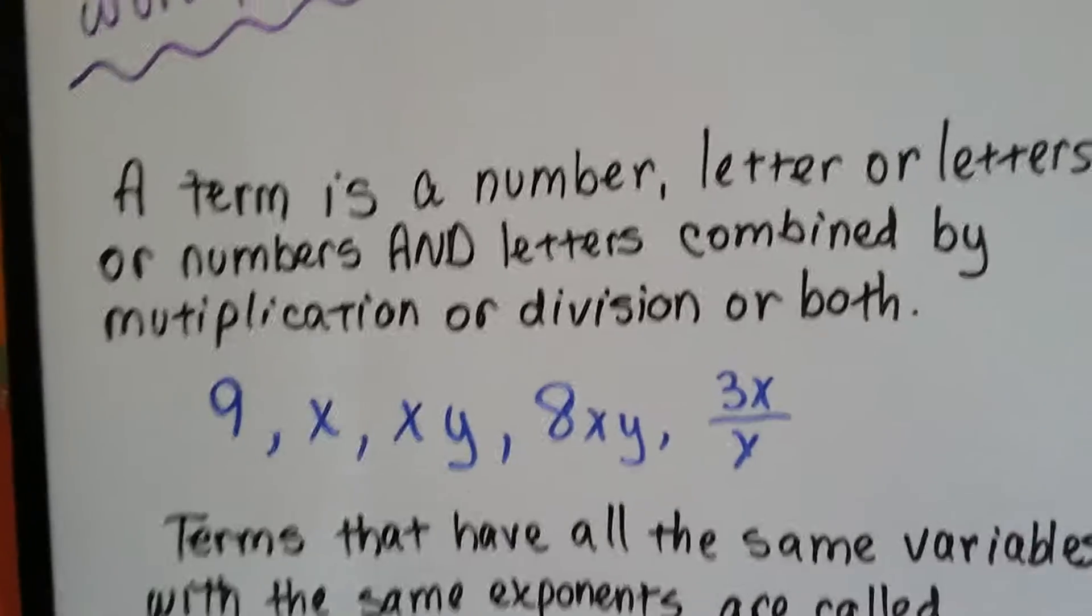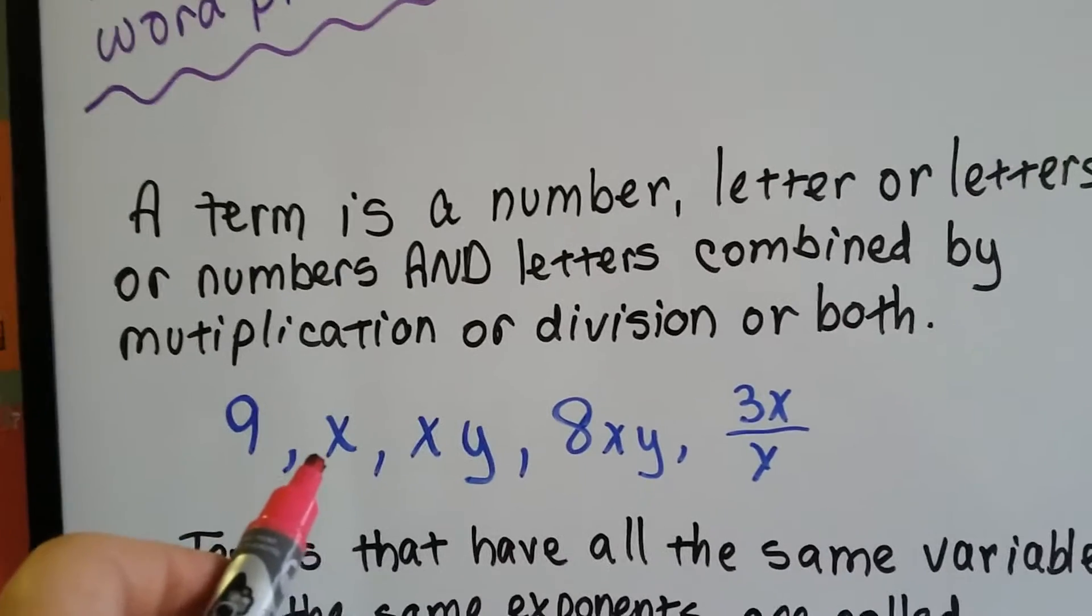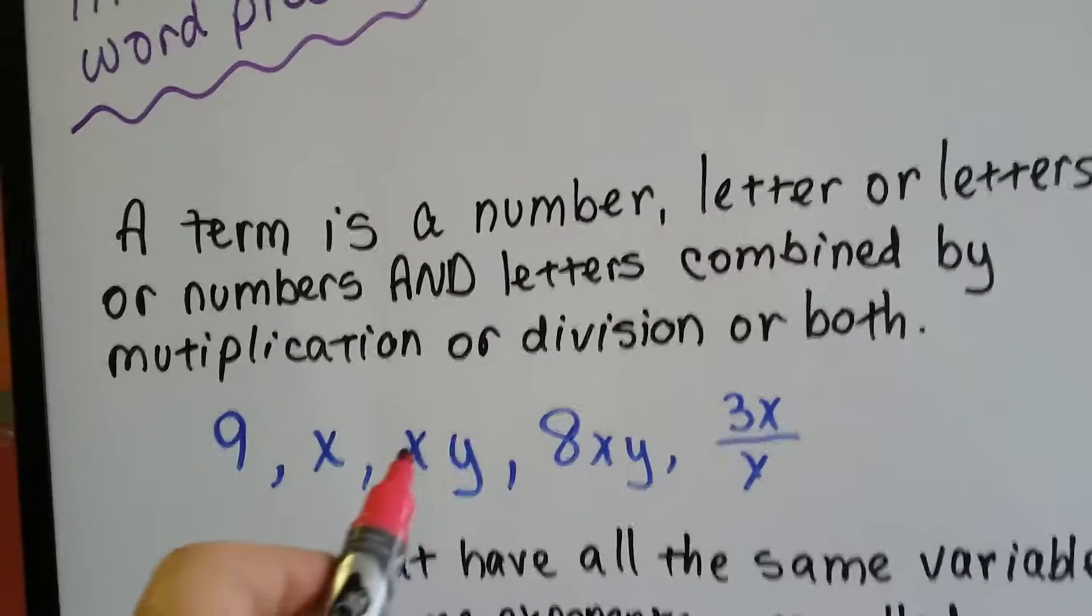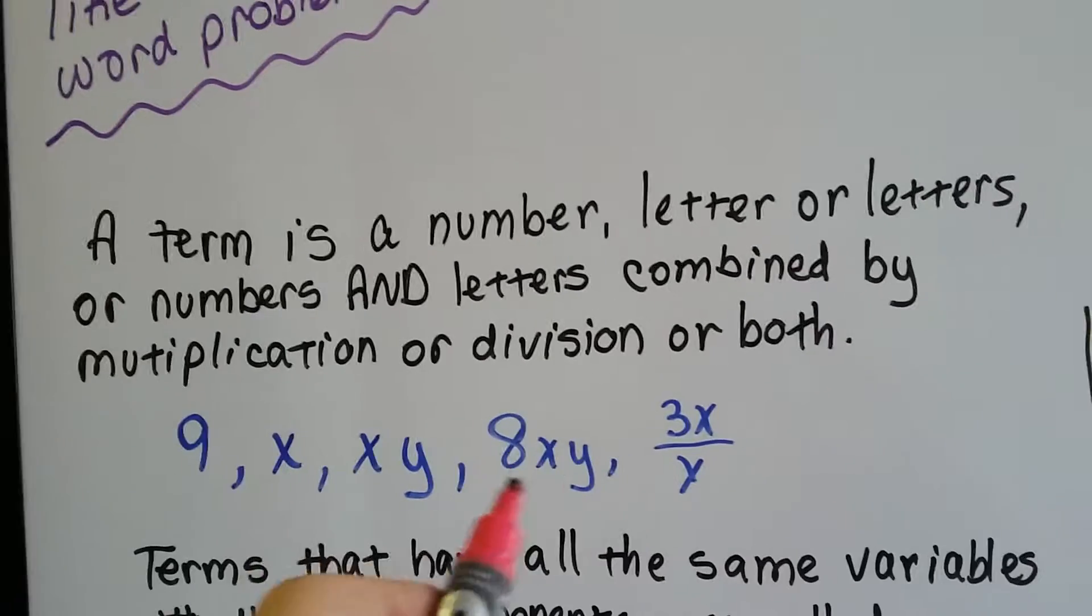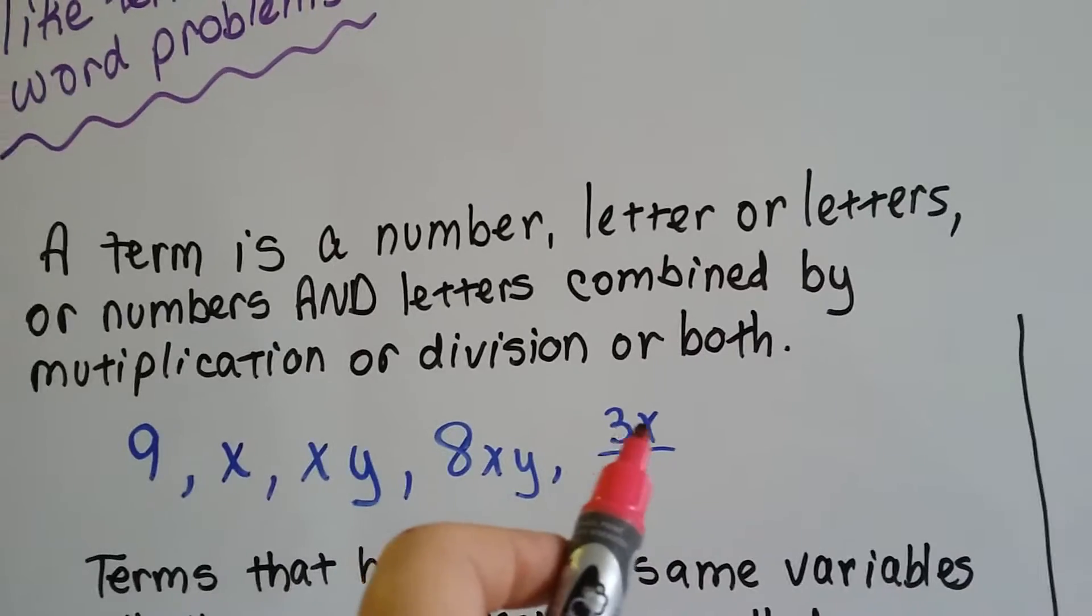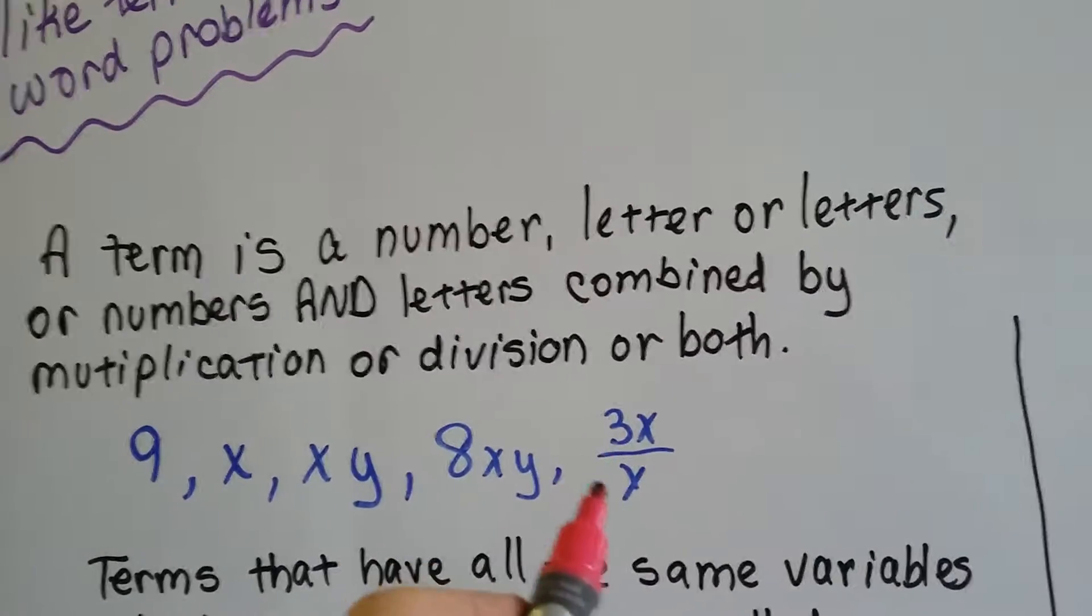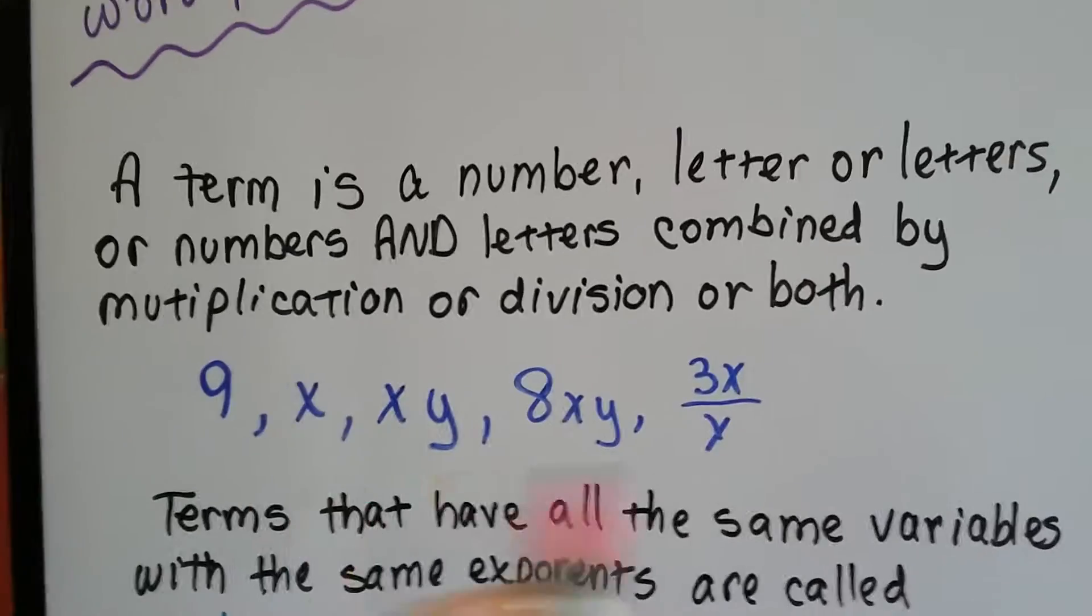Here we've got a standalone number of 9, an x which is a variable, two variables which means to multiply them, 8xy which is 8 times x times y, and we've got 3x which is 3 times x divided by y. These are all terms.